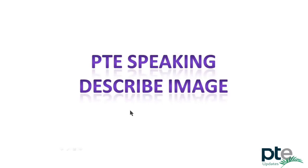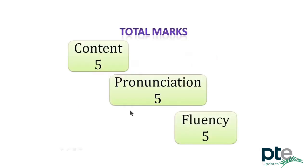Let's begin with the scoring criteria. Just like other speaking items, marks are awarded on the basis of content, fluency, and pronunciation. There are five marks for content, five for pronunciation, and five for fluency. Overall, one describe image item contains 15 marks.